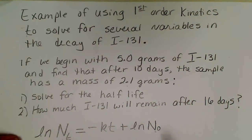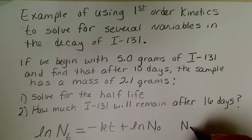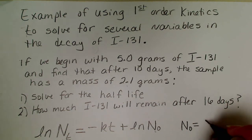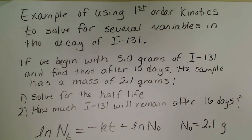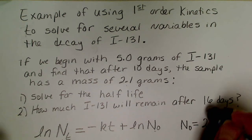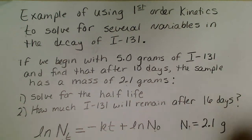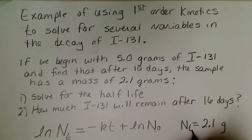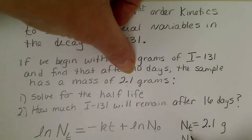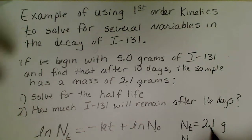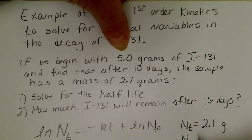That would be N₀, the initial amount. Since the mass is proportional to the activity you can use those interchangeably. It's 2.1 grams, that's Nₜ. Our amount remaining was 2.1 grams, we began with 5 grams.